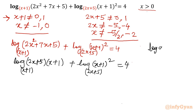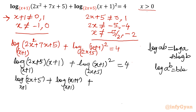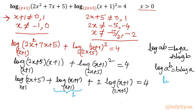Now applying the log AB product rule — that is log A + log B — I will write log(2x+5) with base (x+1) plus log(x+1) with base (x+1). Now for the second log, applying the power rule log A^B = B·log A, I will write 2·log(x+1) with base (2x+5), equal to 4. This term log(x+1) base (x+1) always equals 1, so I take it to the right side — the right-hand side becomes 3.